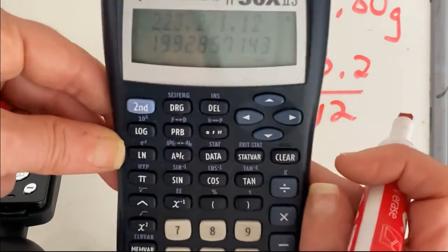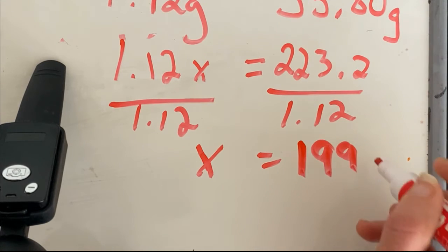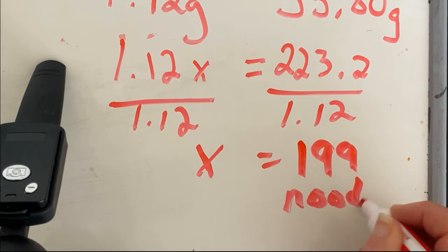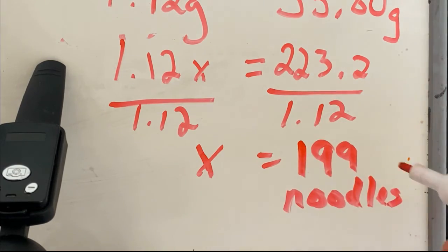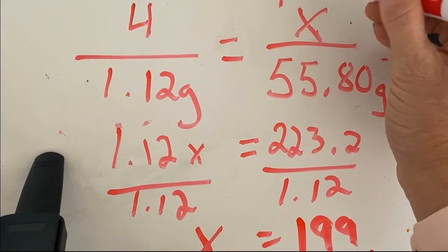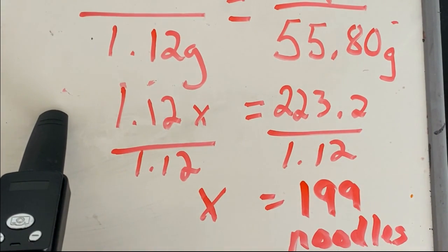All right, well that means I have approximately 199 noodles. It would take 199 noodles to give me the mass of 55.8. Okay, so that's how you do it. That's how you solve for x and you can do it very simply with an electronic balance.